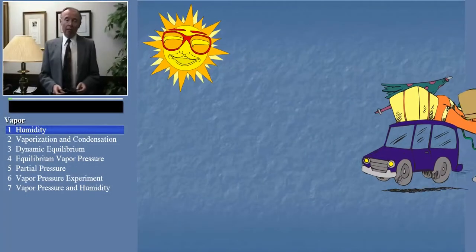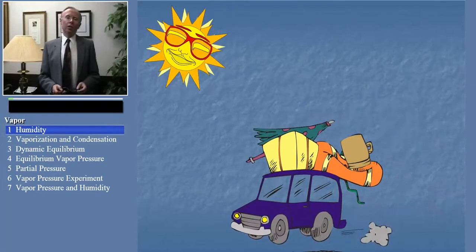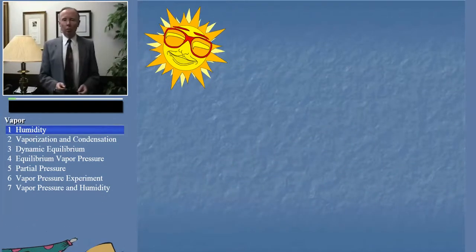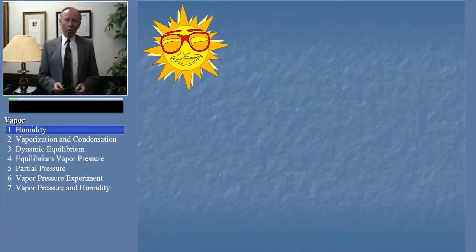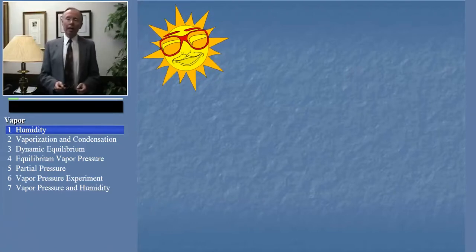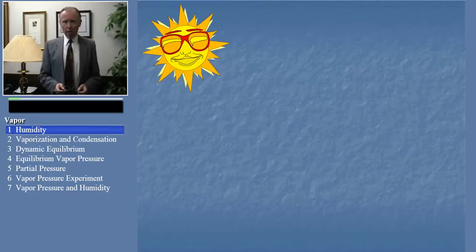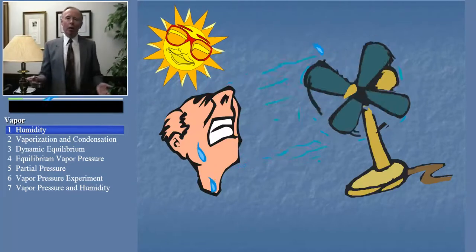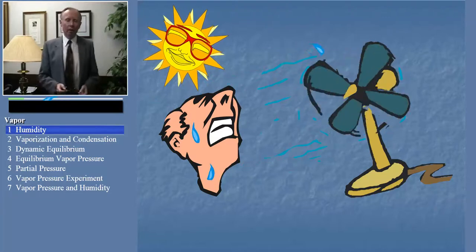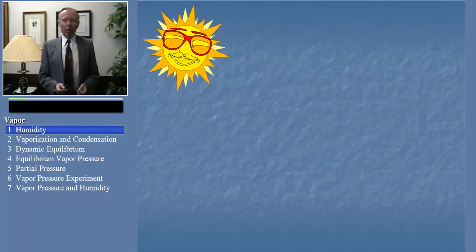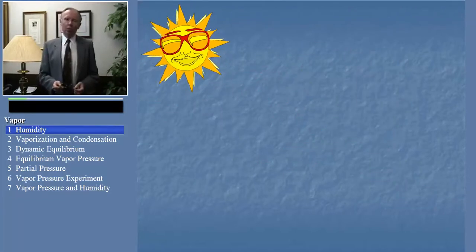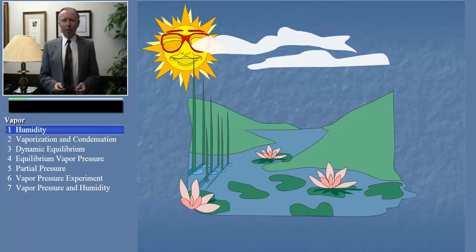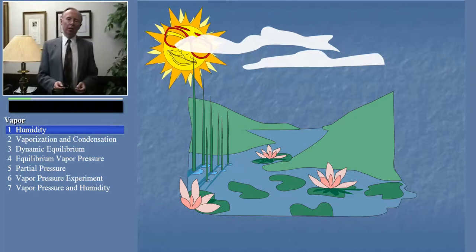Have you ever visited a place like Florida or Washington D.C. where the air is very humid? Maybe you're even from a place with a humid climate. You may have noticed, especially on a really hot day, that the air there feels really thick. People use words to describe the air like oppressive and stifling. Why is that? Well, it has to do with the interplay between the liquid and vapor forms of water in our environment. And that's the general topic of today's lesson.